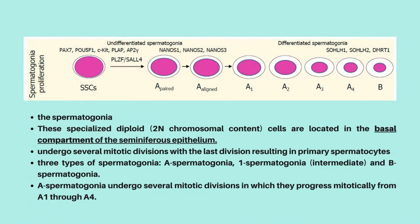In the proliferation phase, spermatogonia are the most primitive cells encountered in the seminiferous epithelium. These specialized diploid cells are located in the basal compartment of the seminiferous epithelium. They undergo several mitotic divisions, with the last division resulting in primary spermatocytes. There are three types of spermatogonia: A spermatogonia, intermediate spermatogonia, and B spermatogonia. A spermatogonia undergoes several mitotic divisions, progressing from A1 through A4. Once the baseline number is established after puberty, the mitotic component proceeds to provide precursor cells and initiate differentiation and maturation.